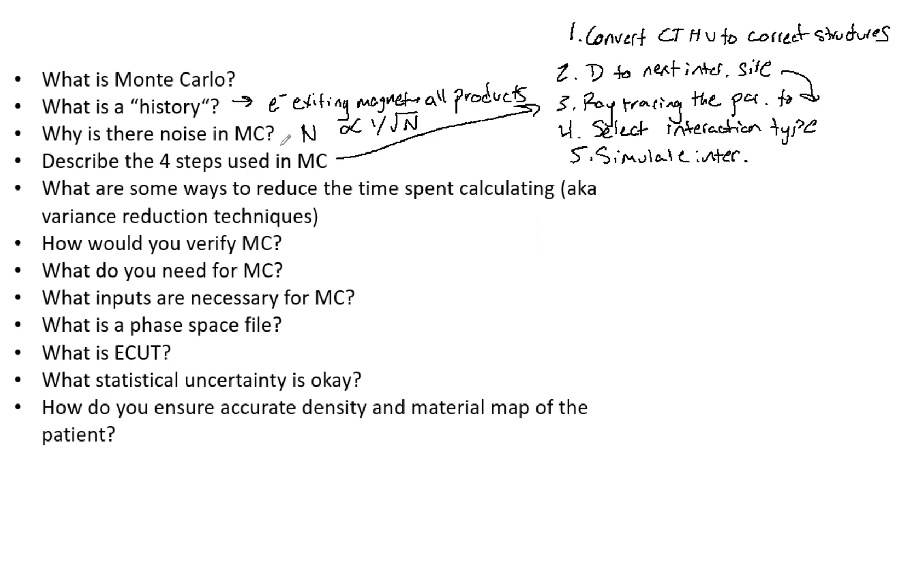What are some variance reduction techniques? Without going into too much detail, first we have condensed histories. This is exactly as it sounds—where most particles don't change energy or direction, so you're condensing the histories, making them more simplistic. That's going to reduce calculation time.